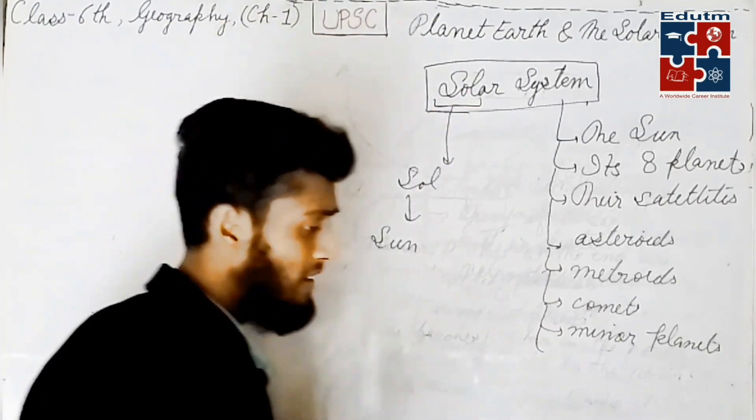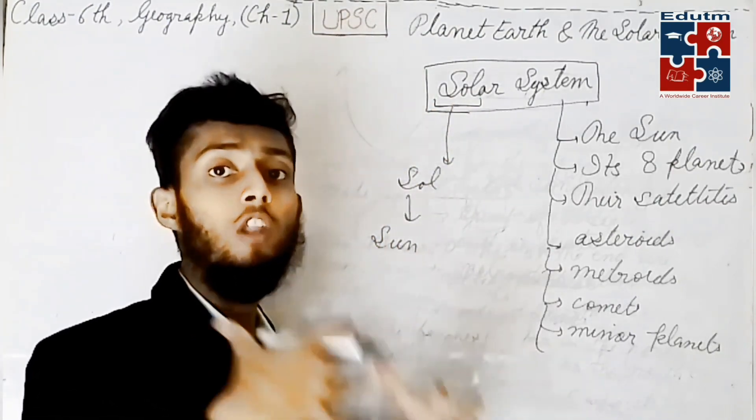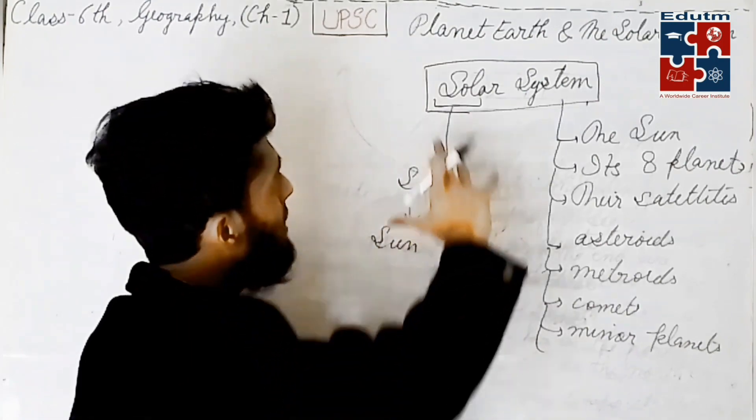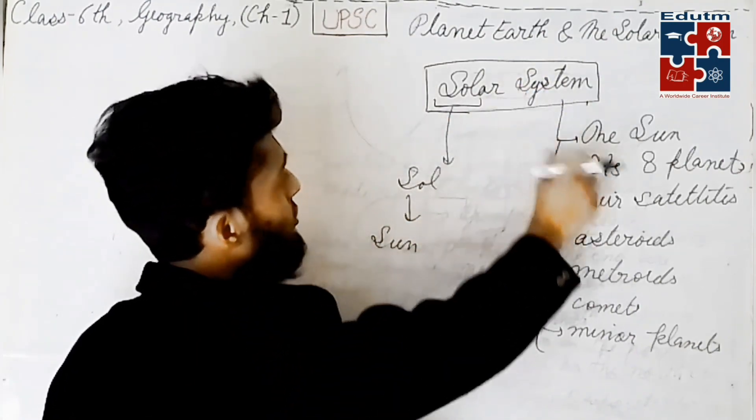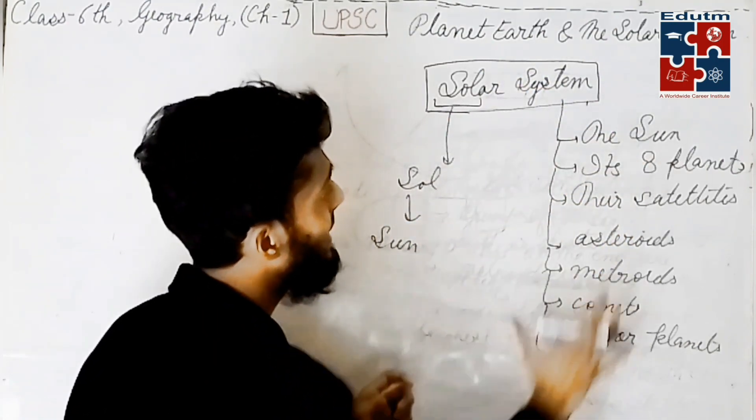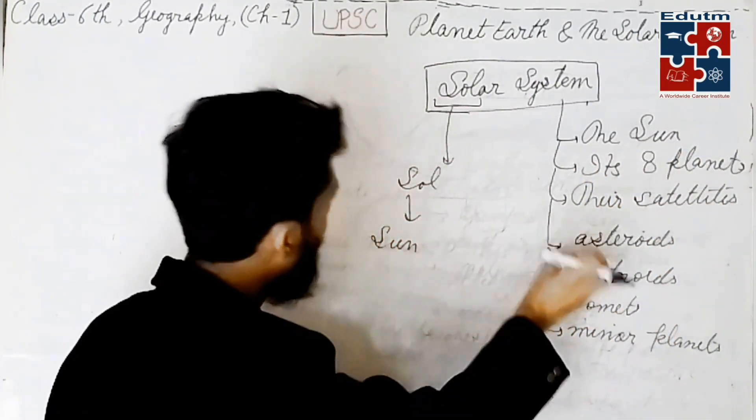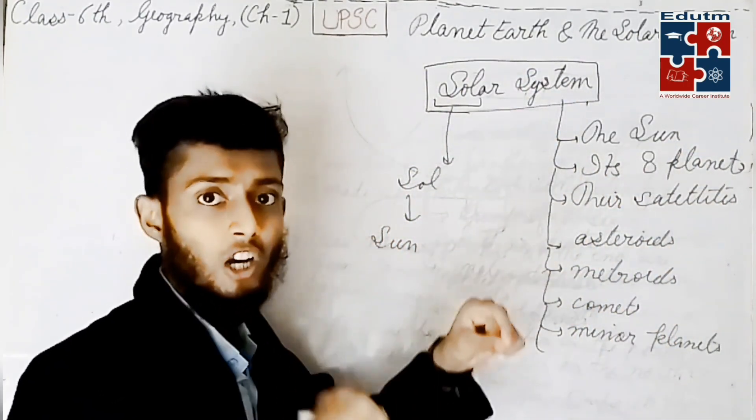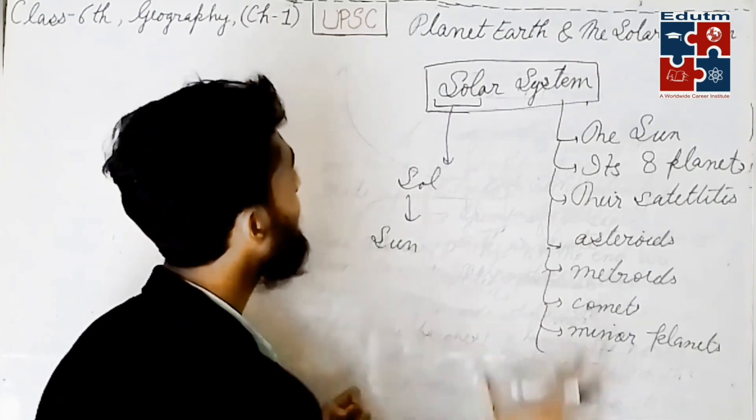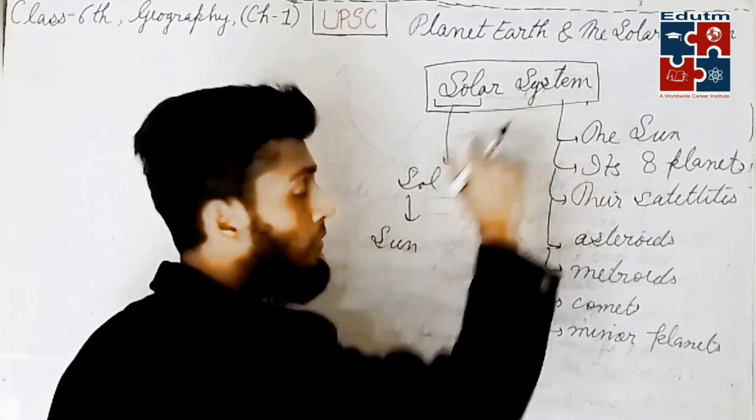The Latin meaning of the sun is sol, and so everything that is related to the sun is known as solar. As we know, just like solar panels, solar batteries. So solar system, it is related to the sun. We know very well that everything including the solar system revolves around the sun. So we say the solar system means the system of the sun.